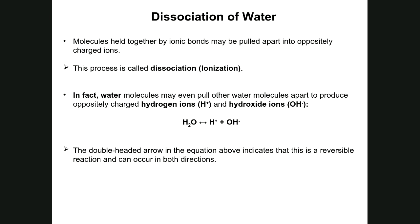With pure water, scientists discovered that every once in a while one water molecule will pull off the proton of another. As biologists, we describe it this way: every once in a while a molecule of H₂O will dissociate into a proton and a hydroxide ion. We write it with a double-headed arrow to indicate this is a reversible process. Because equal numbers of protons and hydroxide ions are released, we never get a true increase or decrease in proton concentration.